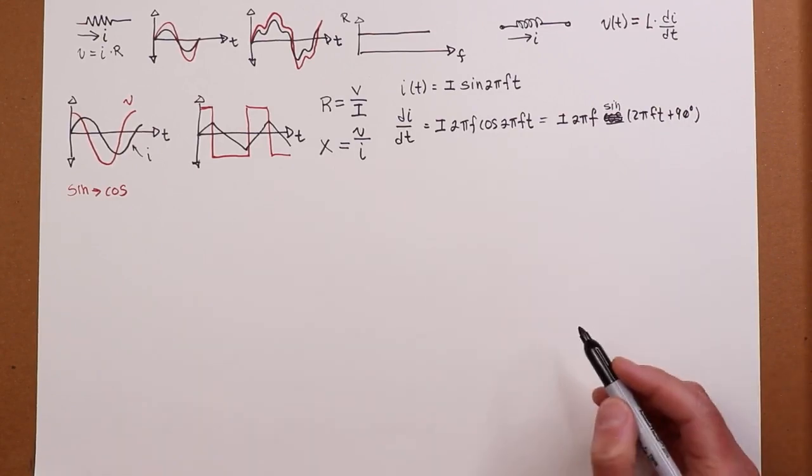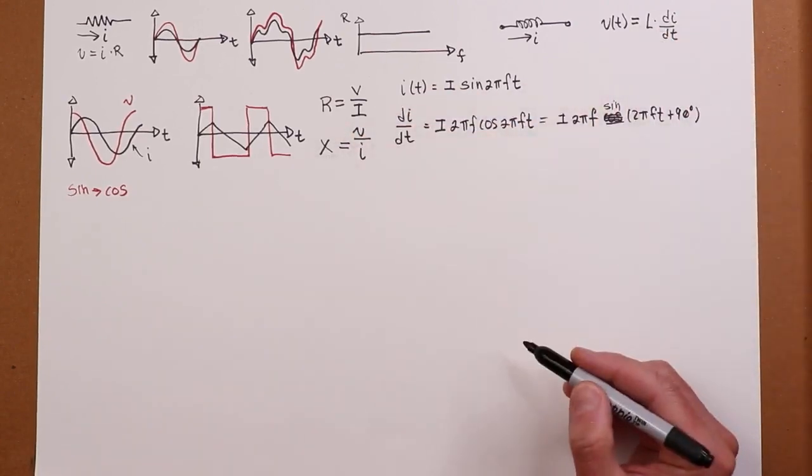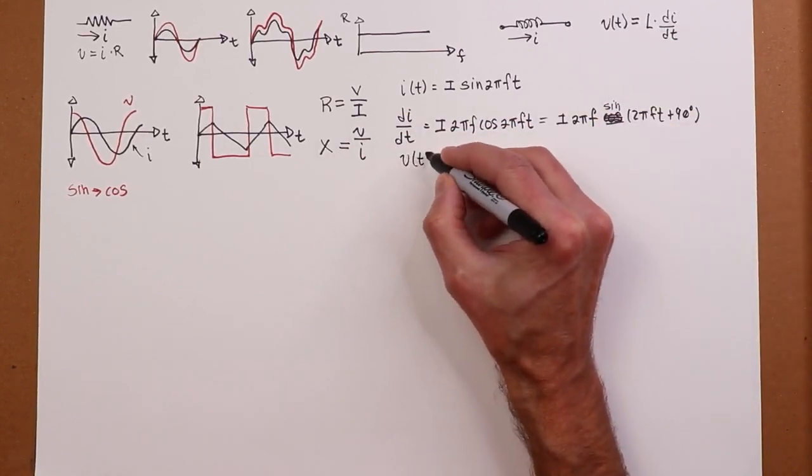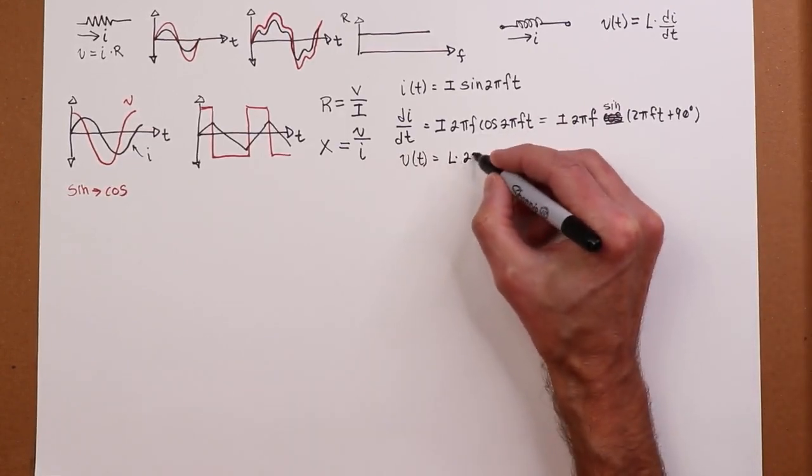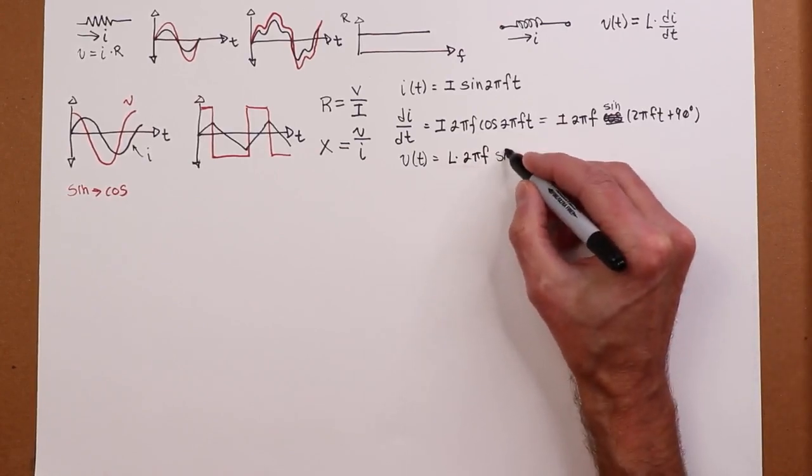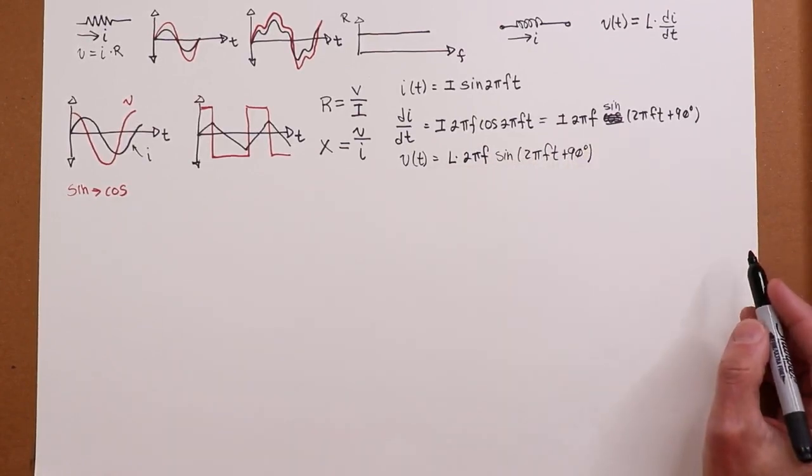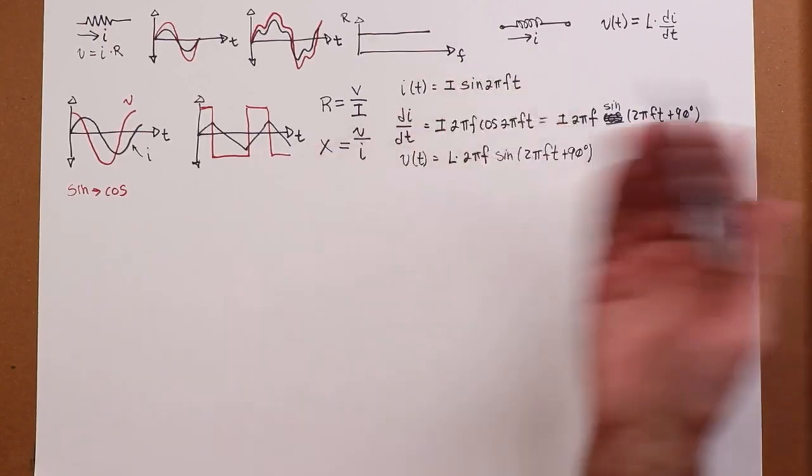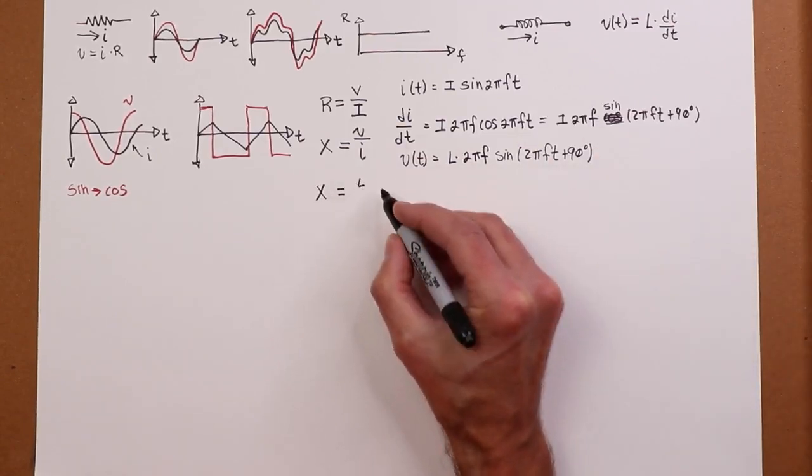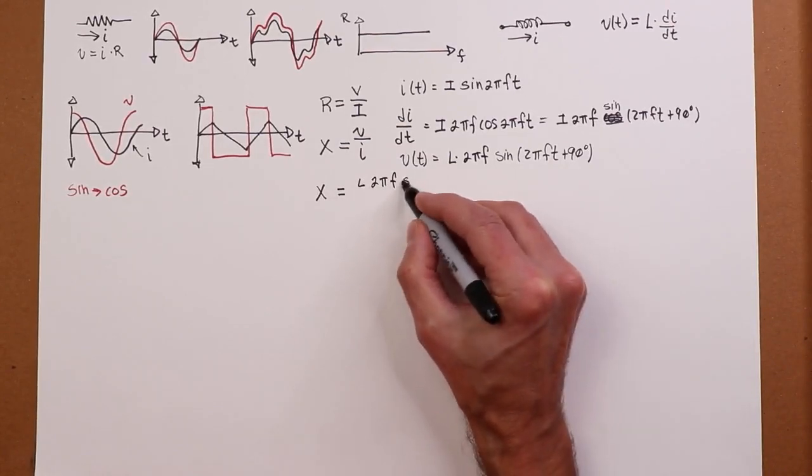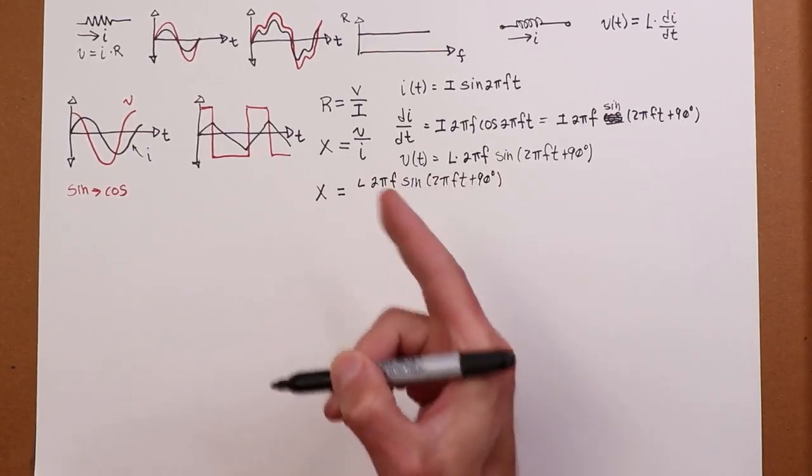So, another way of writing this is to say it's I 2 pi F times the cosine, excuse me, times the sine of 2 pi Ft plus 90 degrees. So far, so good. All right. So, getting back to this guy, my X value. So, what is the voltage? I'm just going to stuff this into my equation over here and see what we come up with. So, V would be L times this.